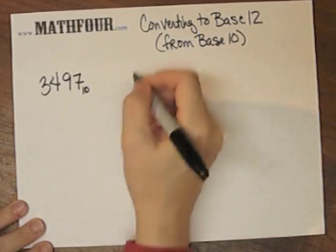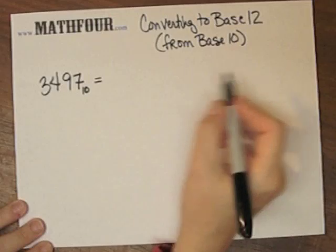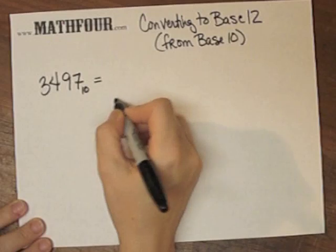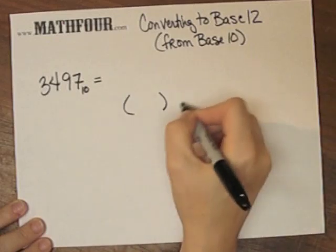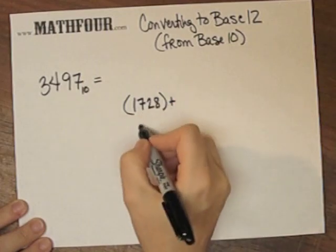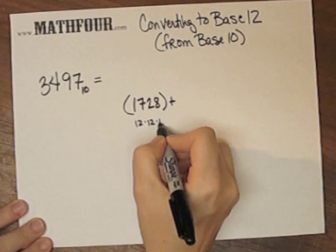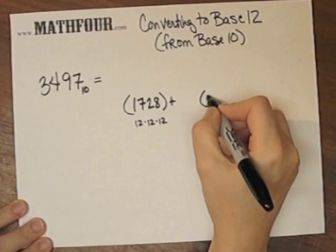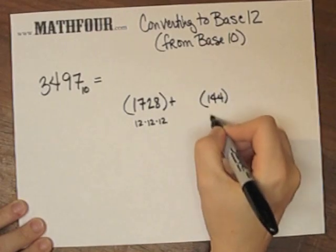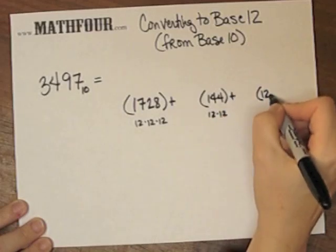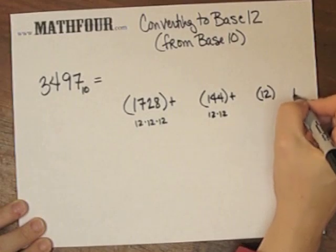What we do is look at this and see what this would mean in terms of how many sets of 1728—remember, this is 12 times 12 times 12—how many sets of 144, which is 12 times 12, how many sets of 12, and then how many singles.